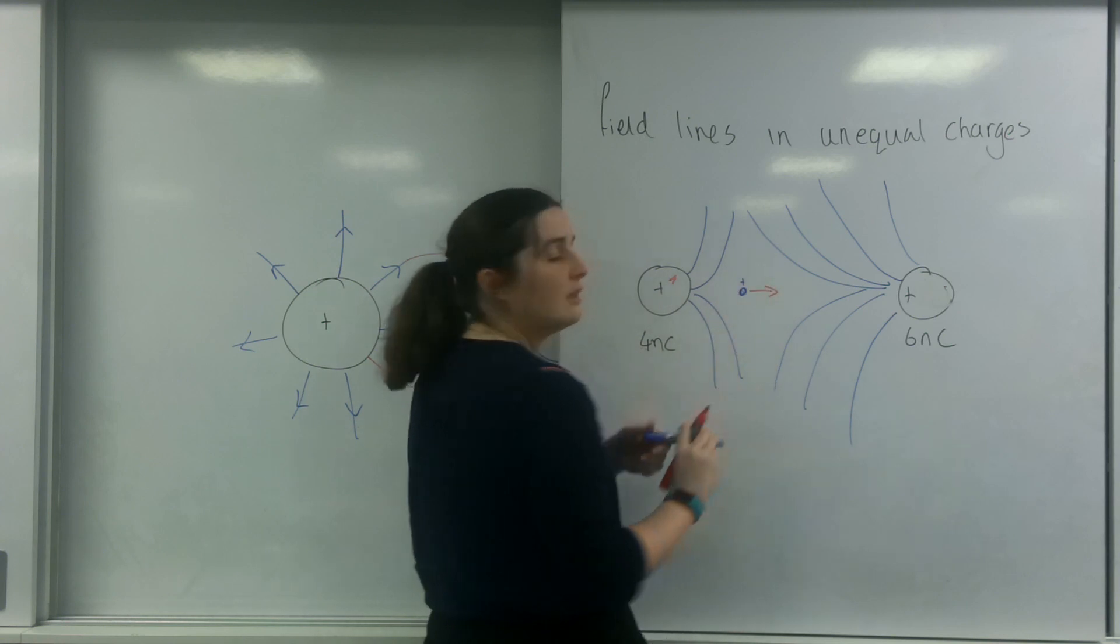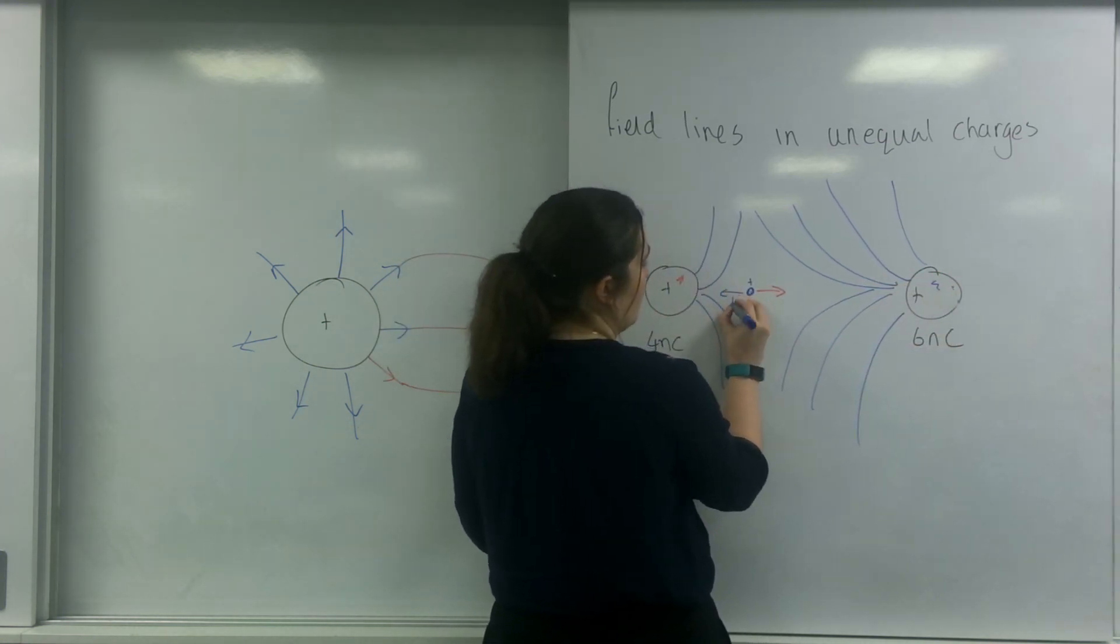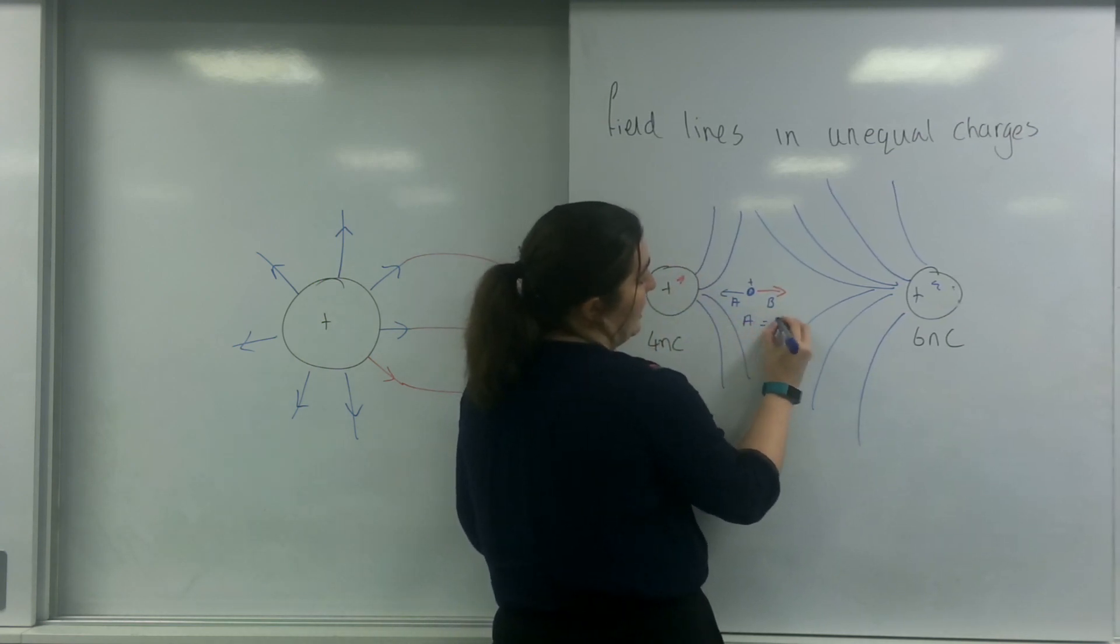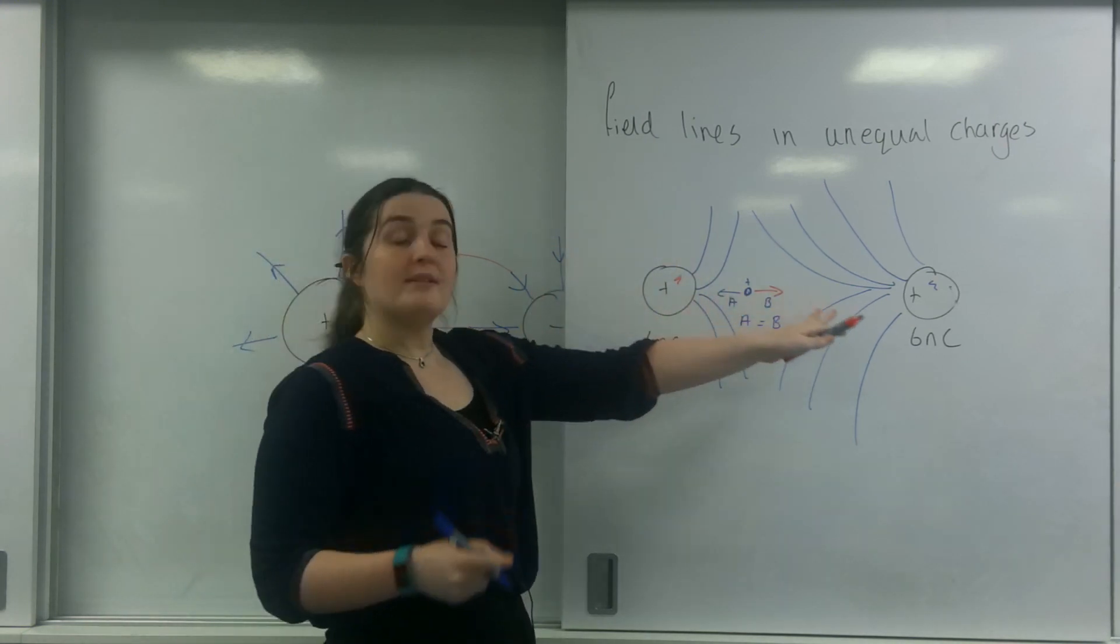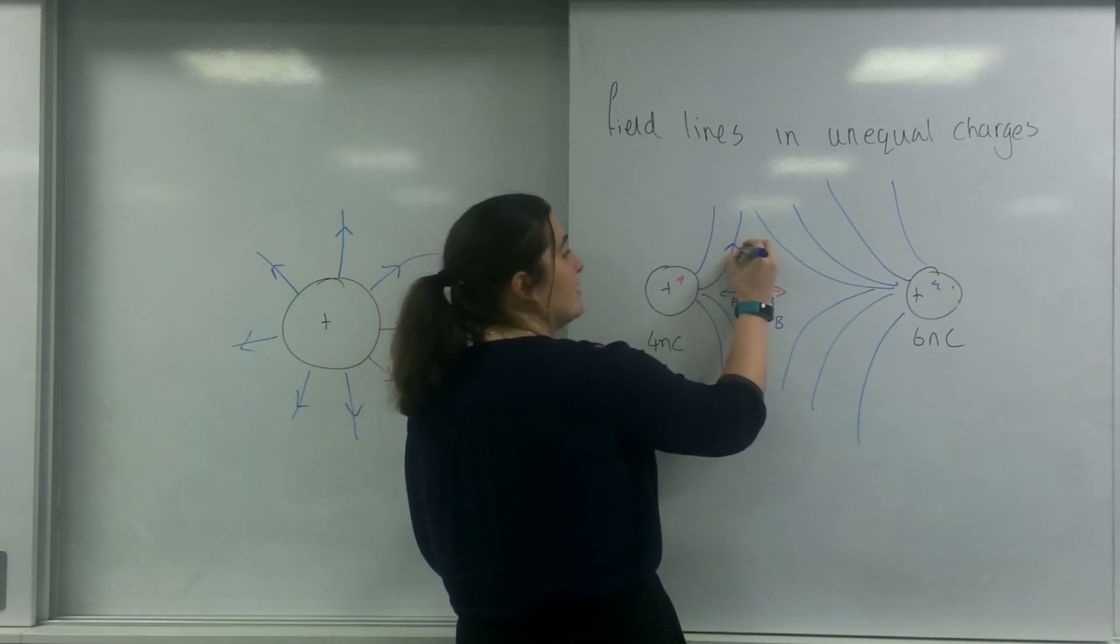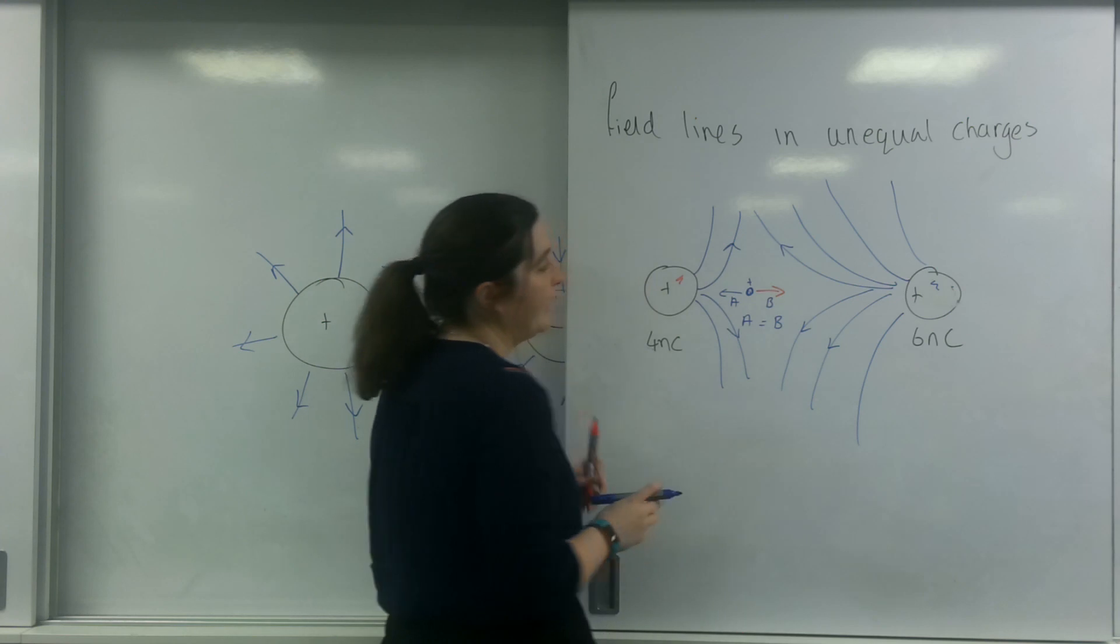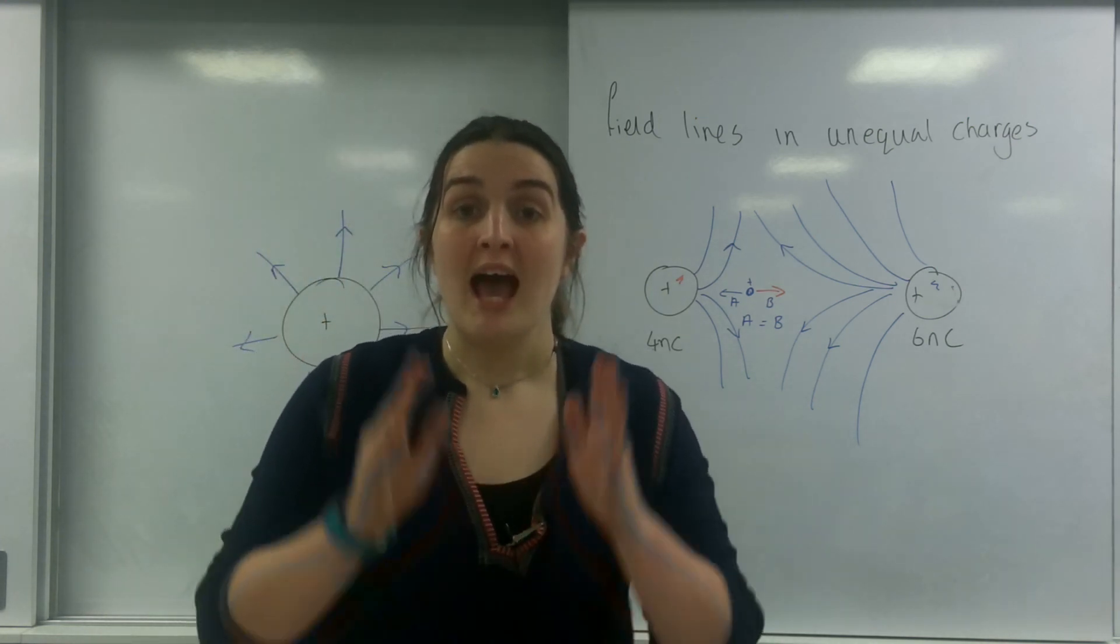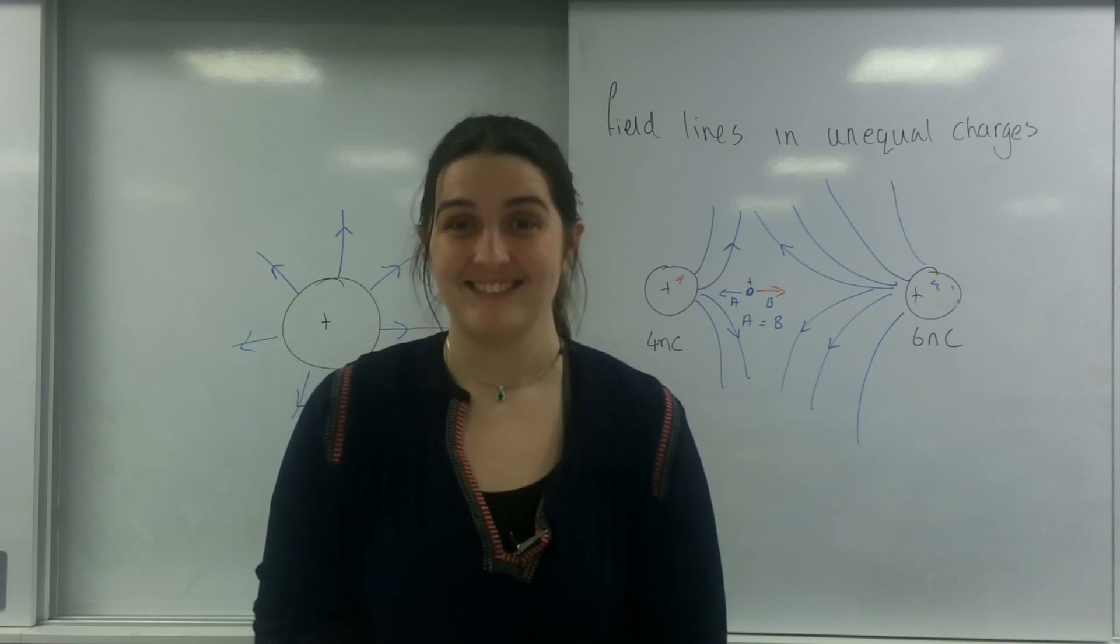So imagine this is a positive charge. And this one here is repelling it. So I'll call this A and B. A will equal B. And it will be closer to the 4 because the 6 will have a stronger field. Not forgetting, of course, the arrows on this. So this is the direction of the field here. Okay. So that there is how to draw electric field lines for a radial field. I'll see you next time. Bye.